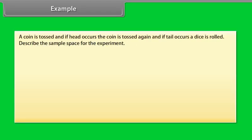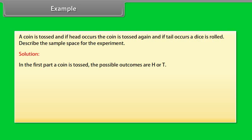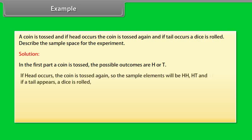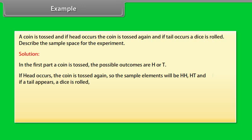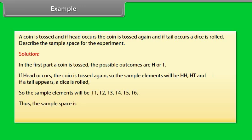Example: A coin is tossed, and if head occurs, the coin is tossed again; and if tail occurs, a dice is rolled. Describe the sample space of the experiment. Solution: In the first part, a coin is tossed. The possible outcomes are head or tail. If head occurs, the coin is tossed again, so the sample elements will be HH, HT. If tail appears, a dice is rolled, so the sample elements will be T1, T2, T3, T4, T5, T6. Thus, the sample space is S = {HH, HT, T1, T2, T3, T4, T5, T6}.